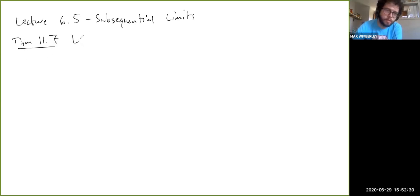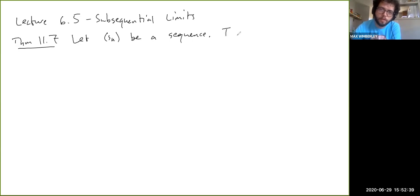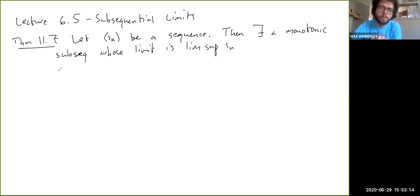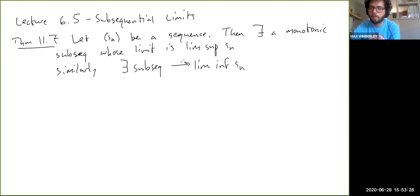Let S be a sequence. There exists a monotonic subsequence whose limit is lim-sup Sn, and similarly there exists a subsequence whose limit is lim-inf Sn. Note these could be infinite, so the subsequence might not be convergent in the strict sense, but its limit equals the lim-sup or lim-inf respectively, whatever that might be.